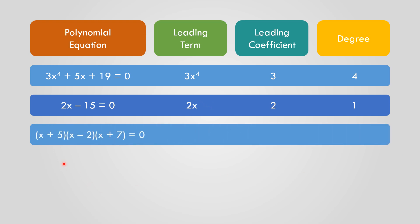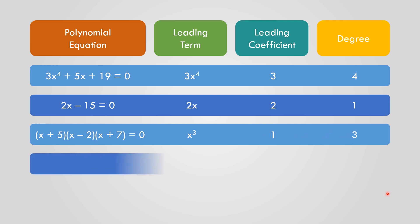Number 3: (X plus 5)(X minus 2)(X plus 7) equals 0. The leading term is X cubed, because X times X is X squared, times X is X cubed. The leading coefficient is 1, which is the numerical coefficient of X cubed. The degree is 3.